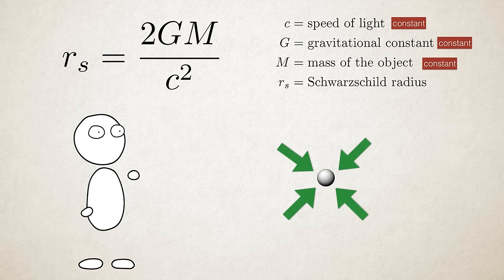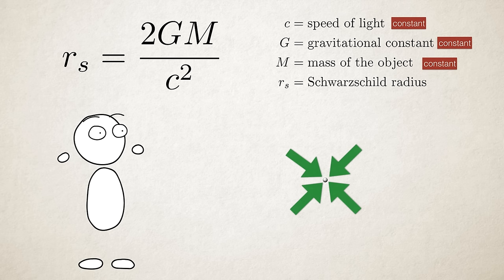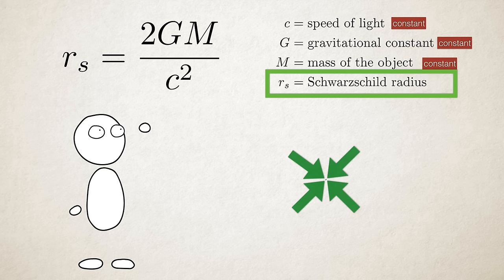If you squeeze it the mass stays the same but its volume gets smaller. If you keep squeezing the ball it will become tiny but stay just as massive as before. All the molecules compressed close to each other until it reaches a critical size. And that's the Schwarzschild radius.